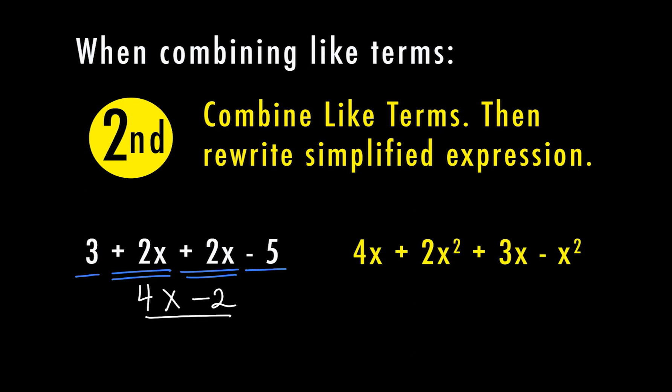For our second example, we have the same problem. We're going to combine 4x and 3x, and also combine 2x squared and negative x squared. As I match up the ones I can combine, I'm underlining some once and others twice — you can circle ones that match and put a square around the others, whatever makes it easy to identify which ones match. Just make sure you keep the sign with the number that comes behind it. So 4x plus 3x gives me a total of 7x, and 2x squared minus x squared gives me 1x squared.